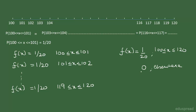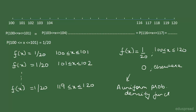So this is the probability density function for our random variable x in this example. Because our random variable is uniformly distributed, we can call this a uniform probability density function.